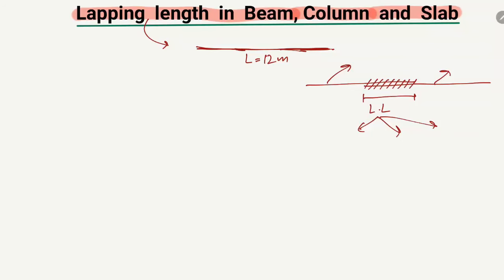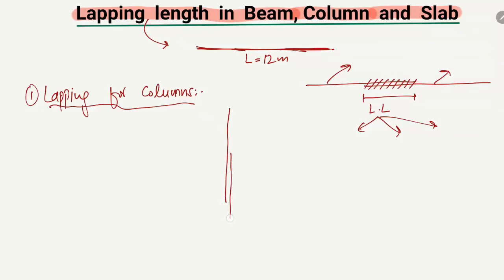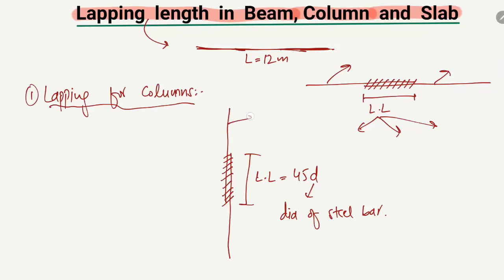So what is the lapping length for columns? For columns, the lapping length is usually taken as 45D, where D is the diameter of the steel bar. For example, if this is one steel bar and this is another steel bar, the lapping length is 45 times the diameter. So for example, if the diameter of this steel bar is 16 millimeters,